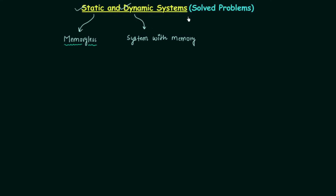Dynamic systems are those in which the output is dependent on past or future values of input at any one instant of time. We do require those past or future values of input, and we can have them only if we store them. To store anything we need a memory element, therefore dynamic systems are systems with memory.